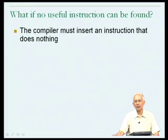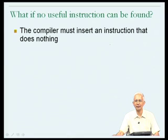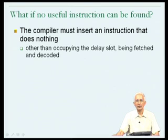If no useful instruction can be found, the compiler does not have the luxury of stalling the pipeline — that is a hardware activity — but the compiler must do the next best thing: insert an instruction that does nothing. If the compiler inserts such an instruction into the branch delay slot, the net effect is something like a stall cycle, but it will have no incorrect effect on the program. The instruction will do nothing other than occupying the branch delay slot. Of course, being an instruction, it will have to be fetched and decoded, but other than this, it will do nothing.